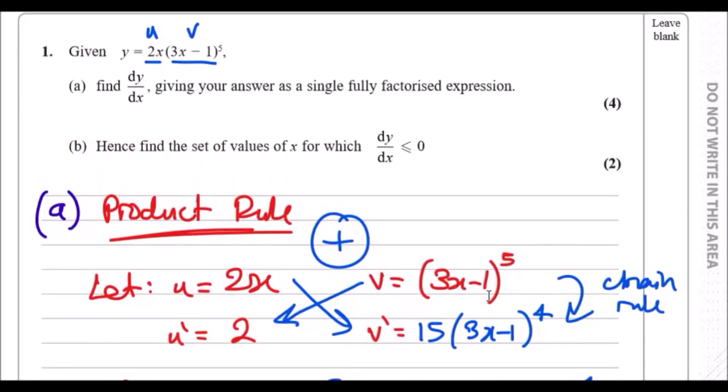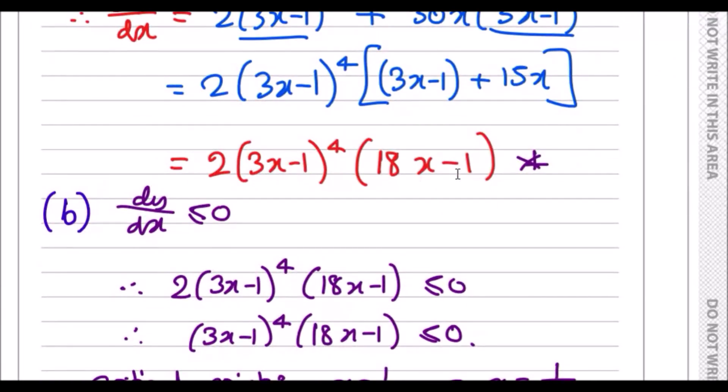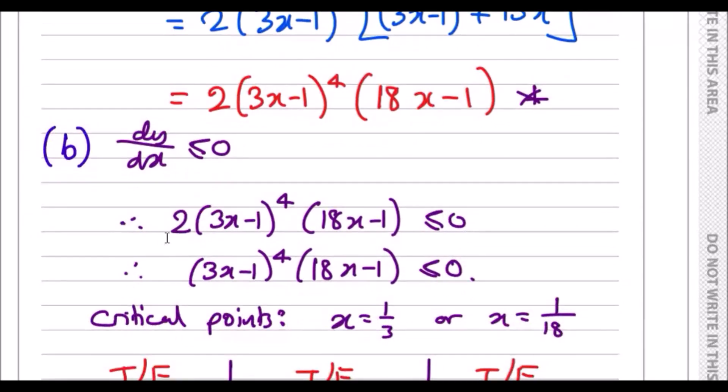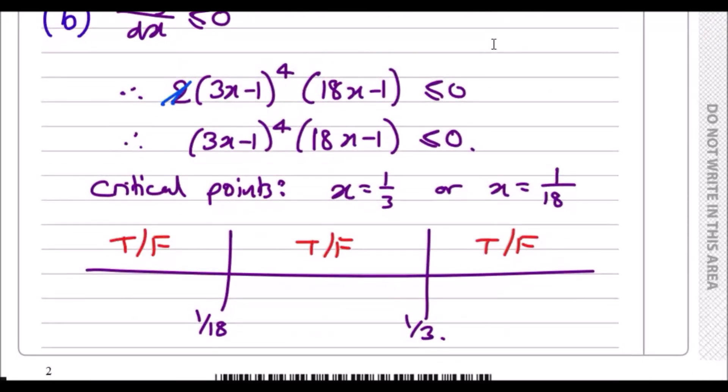Part (b): Hence find the set of values of x for which the derivative is less than or equal to zero. In other words, when the solution we just obtained is negative or zero. Opening statement: dy/dx ≤ 0, copy this down exactly.